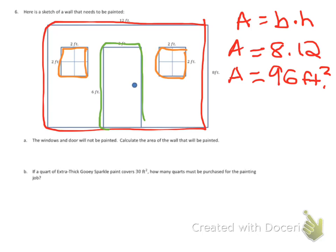Now, we don't know exactly where those will come in right now, so let's start by reading what they want us to look for. The windows and the door will not be painted. Calculate the area of the wall that will be painted.